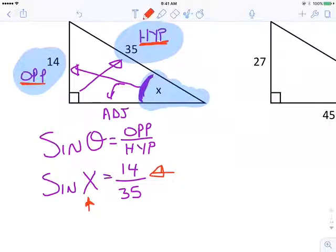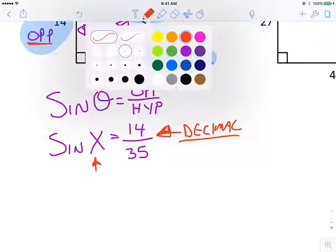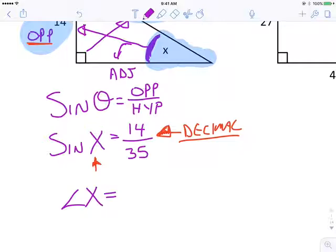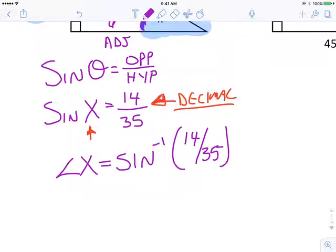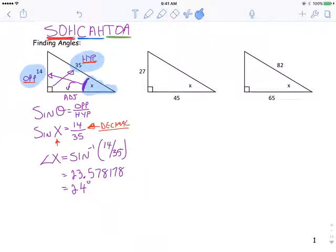That next step is, if I know I'm looking for the angle, angle X is equal to, I have to use the inverse function, sine to the minus 1, of 14 over 35. Punch that into your handy dandy calculator, you get 23.578178, which is 24 degrees, because with angle measurements, we round to the nearest whole number. There's the first one.